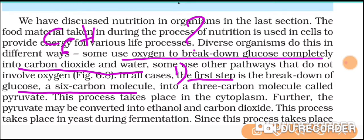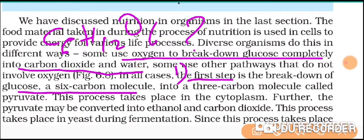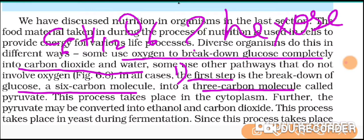Glucose is written as C₆H₁₂O₆. Since it is a six-carbon atom compound it is also sometimes referred to as hexose. This six-carbon atom compound is then converted into a three-carbon atom molecule, and the name of that three-carbon atom molecule is pyruvate.